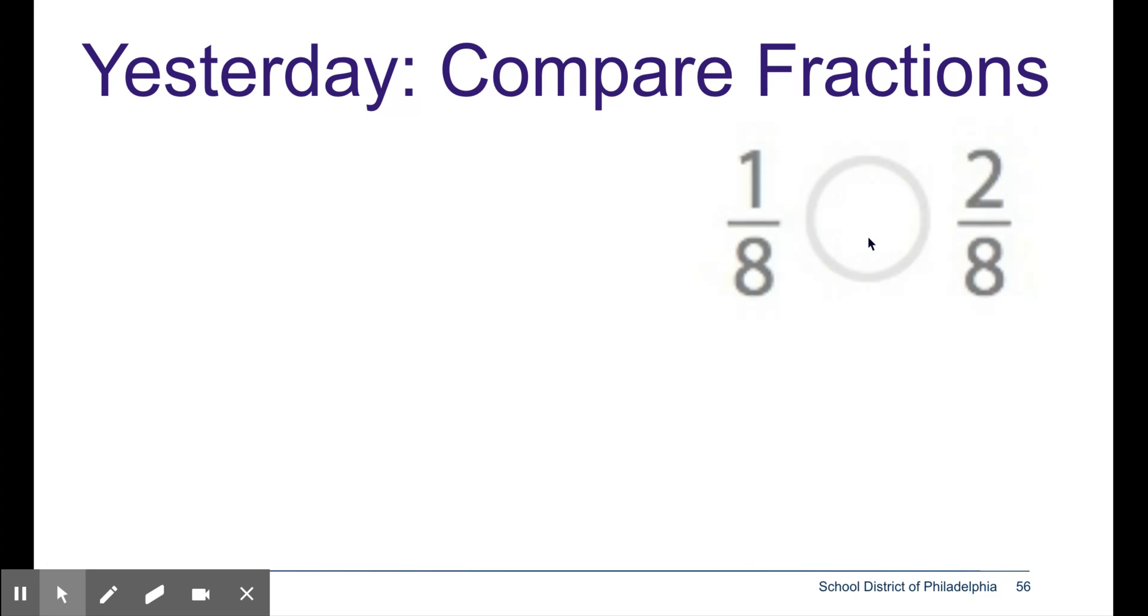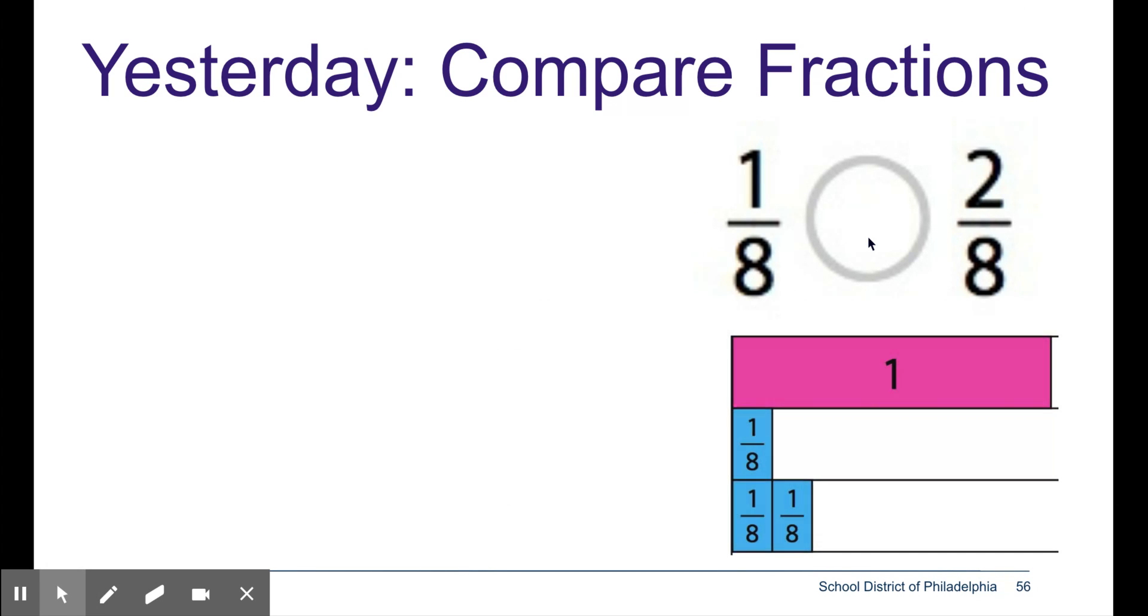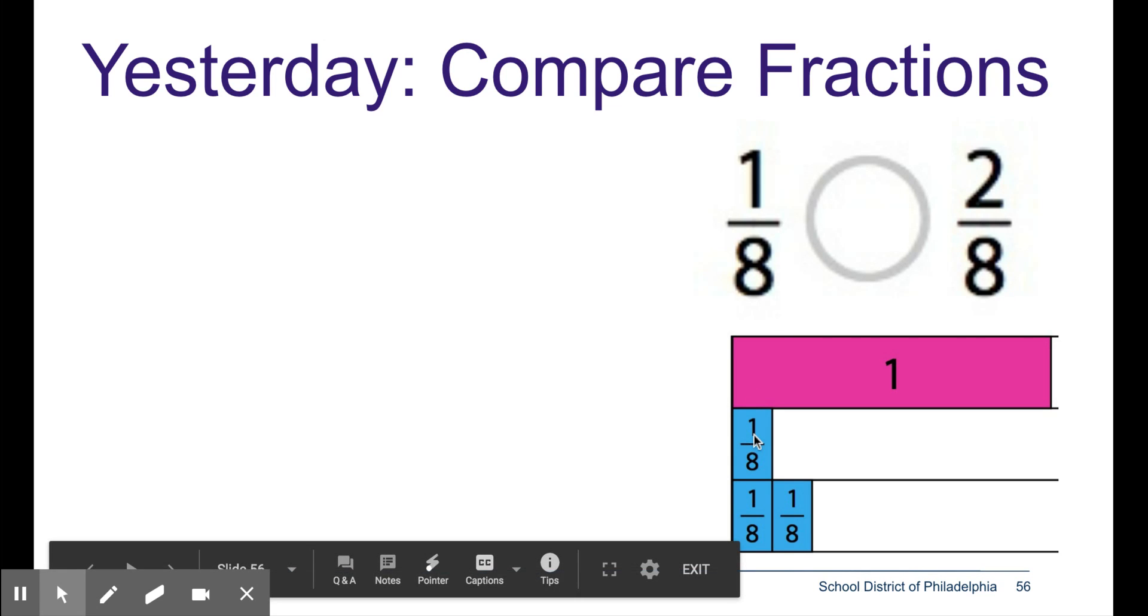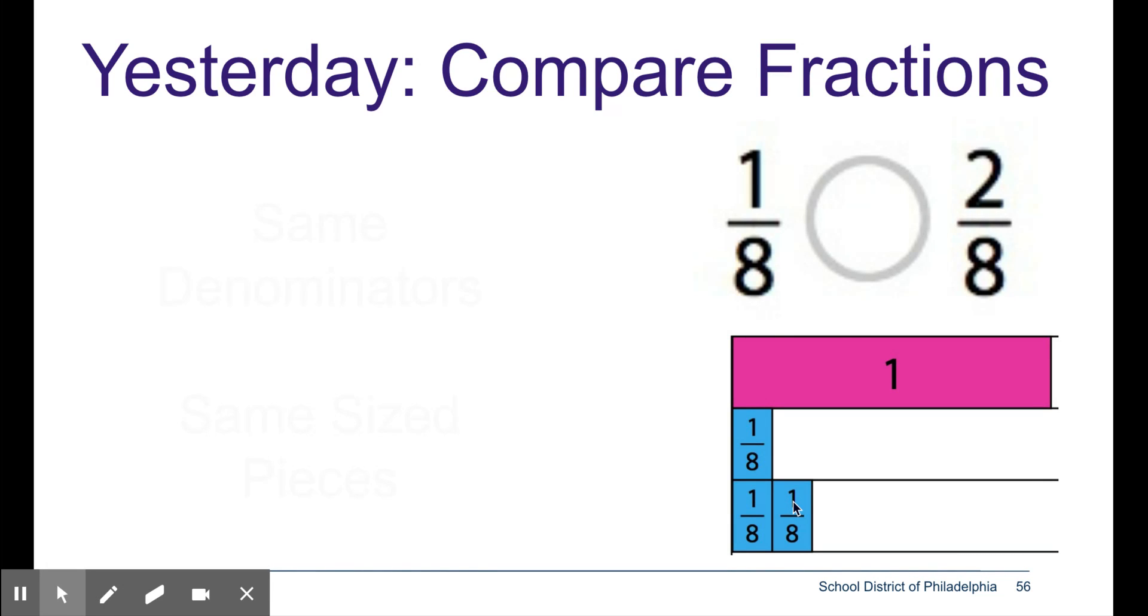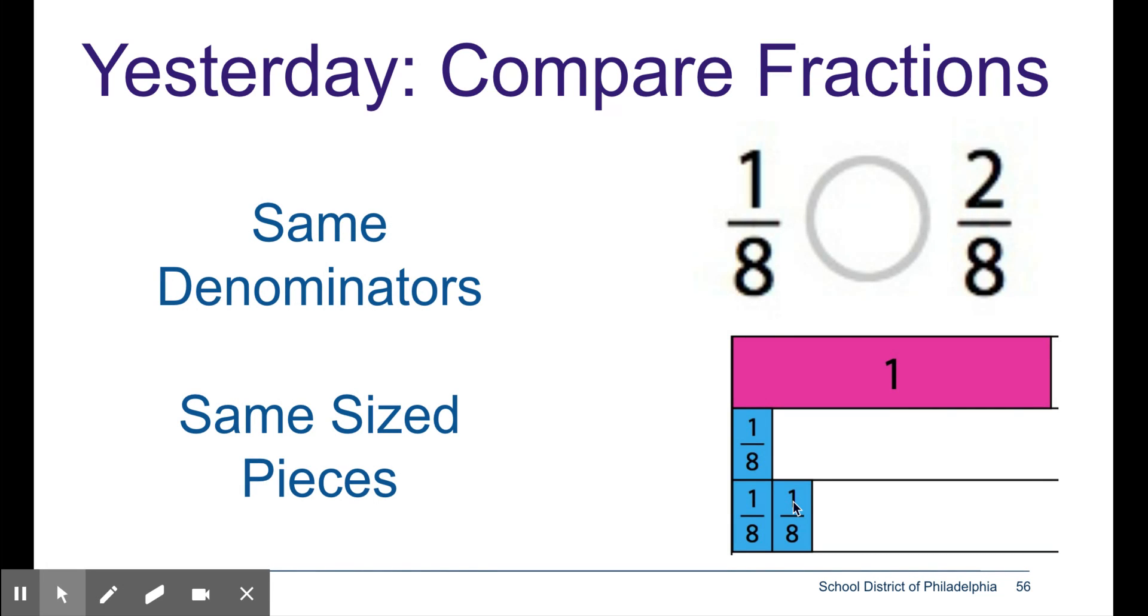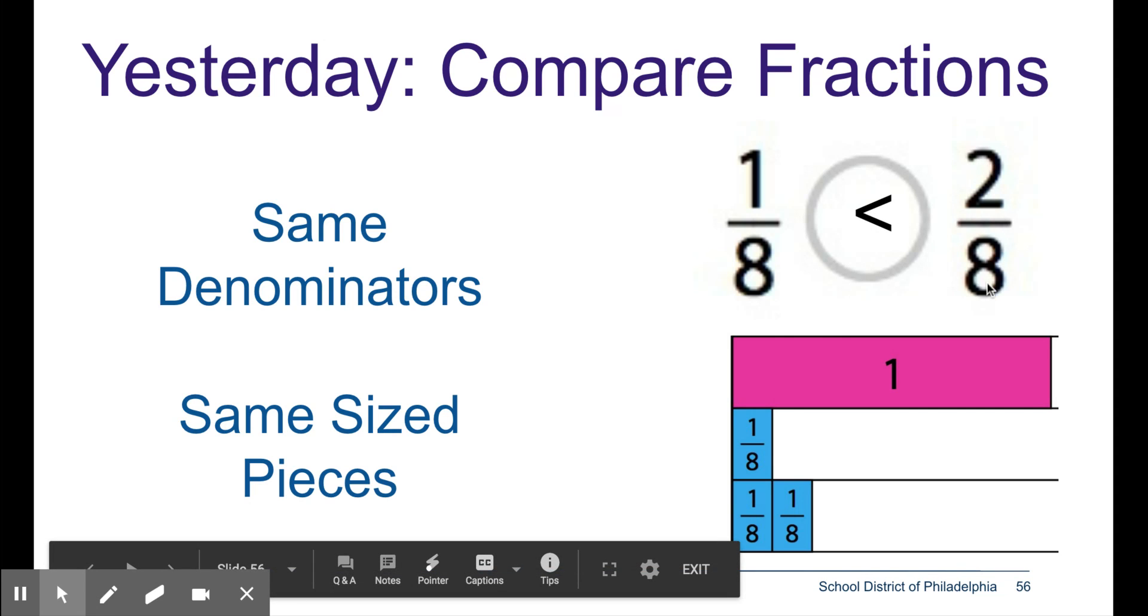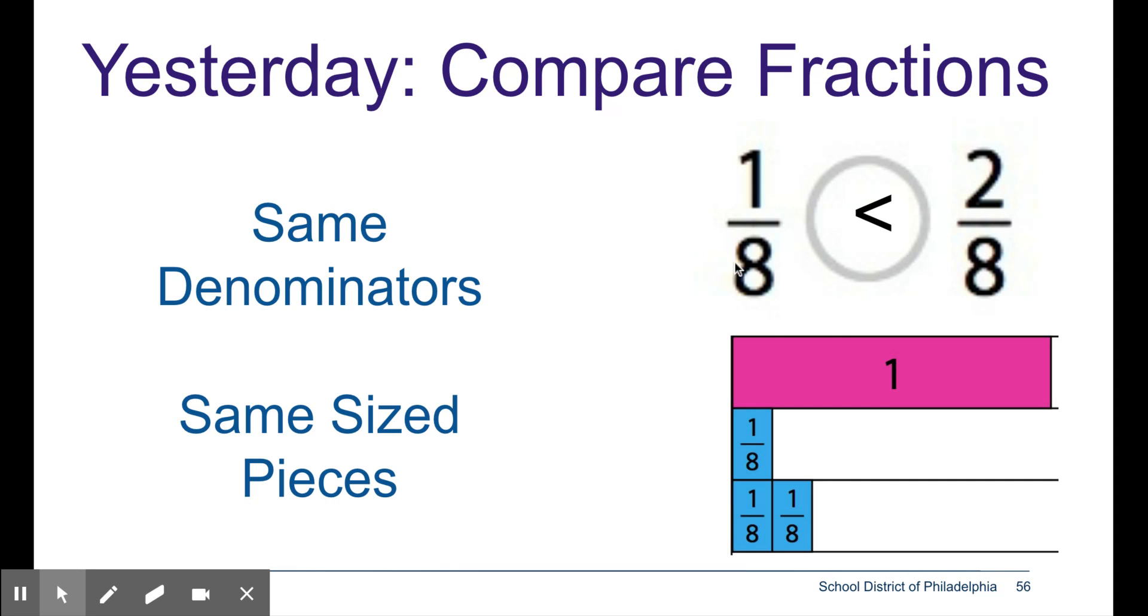Another example that we looked at yesterday was 1 eighth and 2 eighths. 1 eighth size piece compared to 2 eighths sized pieces. Again they have the same denominator so the pieces were the same size. That made it very easy to compare. 2 eighths sized pieces is greater than 1 eighth sized piece.